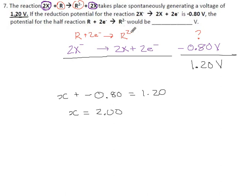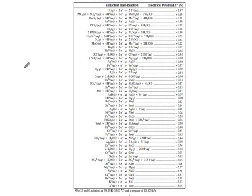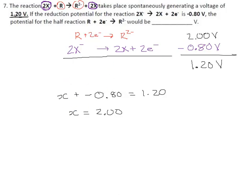So this reaction, I can get rid of the question mark now, must be exactly 2 volts. Is that an element that actually exists? I don't think there is anything at exactly 2. Our table doesn't have anything at 2 volts, so this might be a completely made-up element, or it might just be an element that isn't in our data book, but either way, that's got to be its voltage.